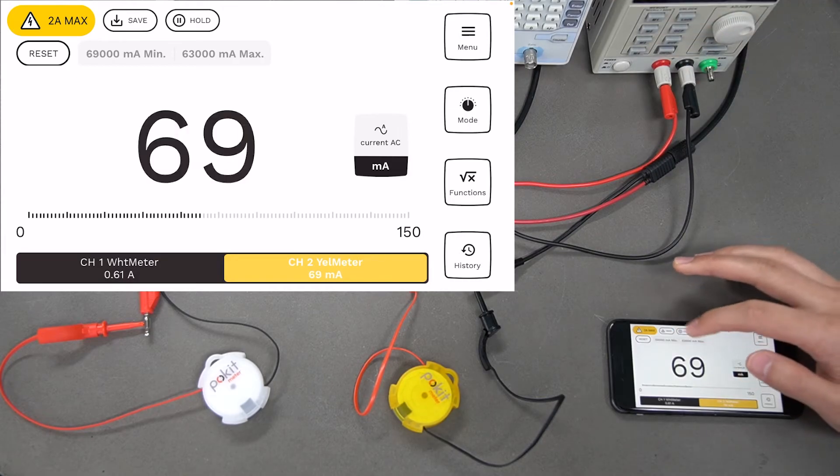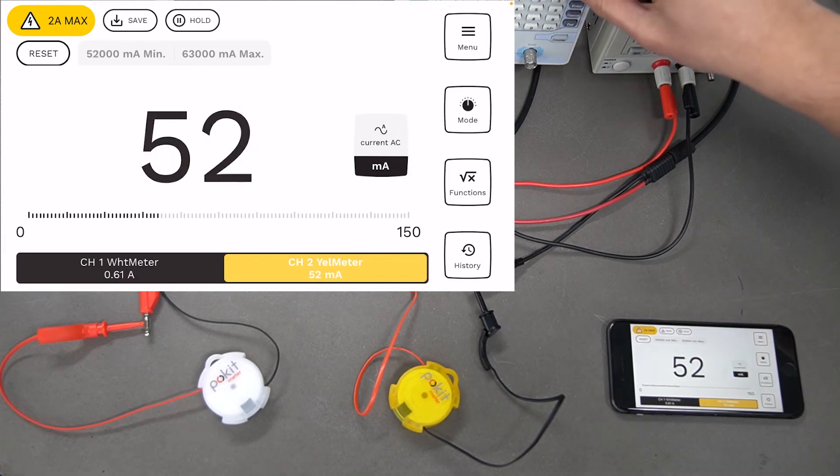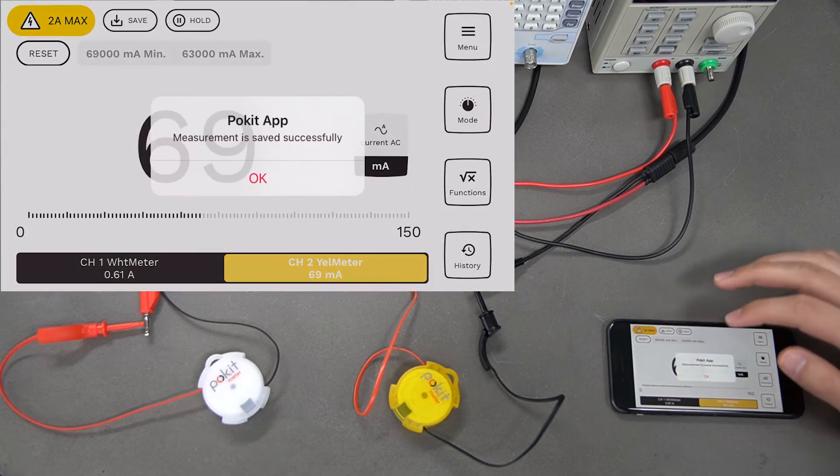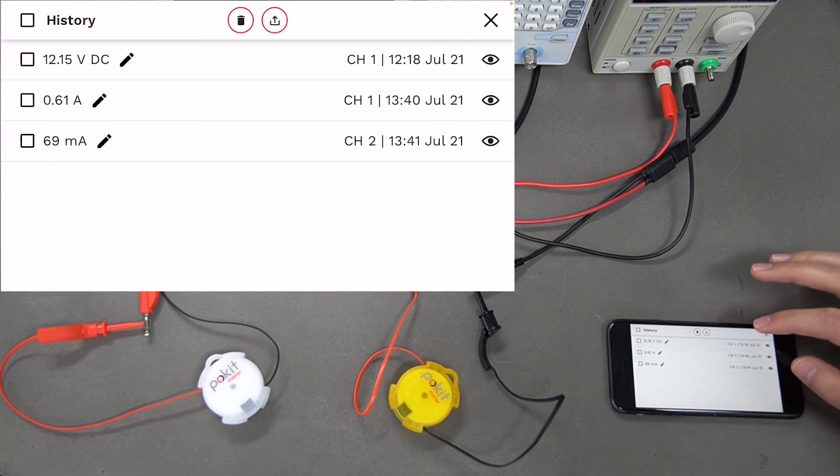You've got the minimum and maximum values at the top again. We can save that if we'd like, and it will save down to the bottom here.